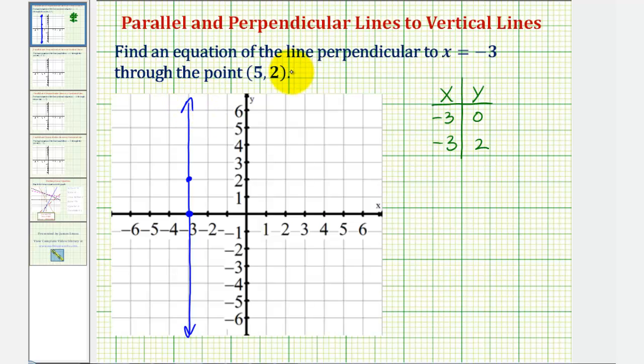So we're looking for the equation of the line that's perpendicular to this line through the point (5, 2), which would be this point here. Well, if our line is passing through this point and it's perpendicular to this vertical line, which means it intersects the line and forms a right angle, it must be this horizontal line here.